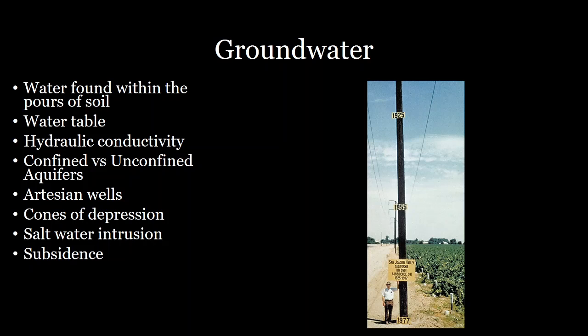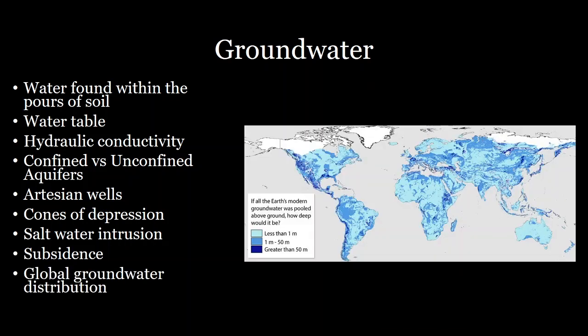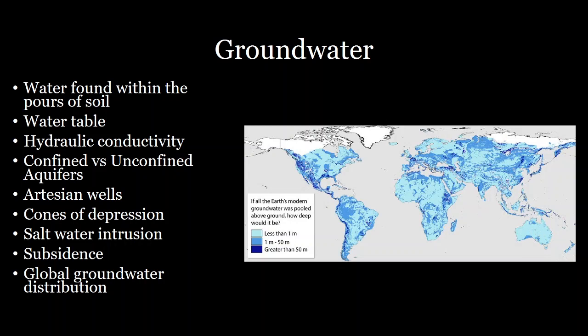A lot of times when you have subsidence, the pore space that you lost can't be regained and you're losing that aquifer and the potential to water your crops. We can see here in the map the distribution of groundwater around the globe. The depth at which the groundwater table sits can vary significantly — some areas such as in the Rockies can have very thick groundwater aquifers, whereas some areas have almost none. For example, in Australia, you have very little groundwater because it's so hot and evaporates so quickly.